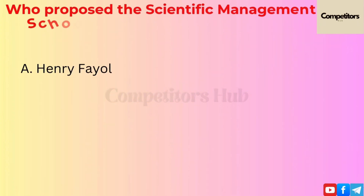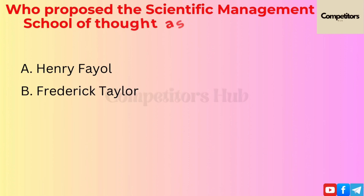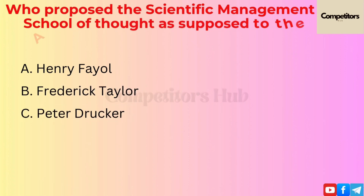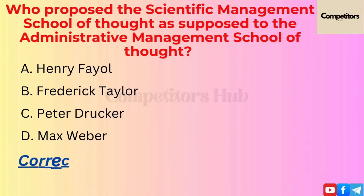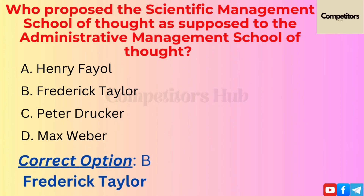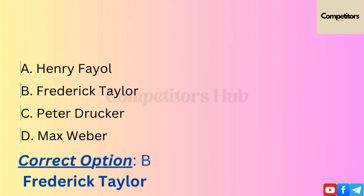The next question is: who proposed the scientific management school of thought as opposed to the administrative management school of thought? Option A: Henry Fayol. Option B: Frederick Taylor. Option C: Peter Drucker. Option D: Max Weber. The correct option is B, Frederick Taylor.